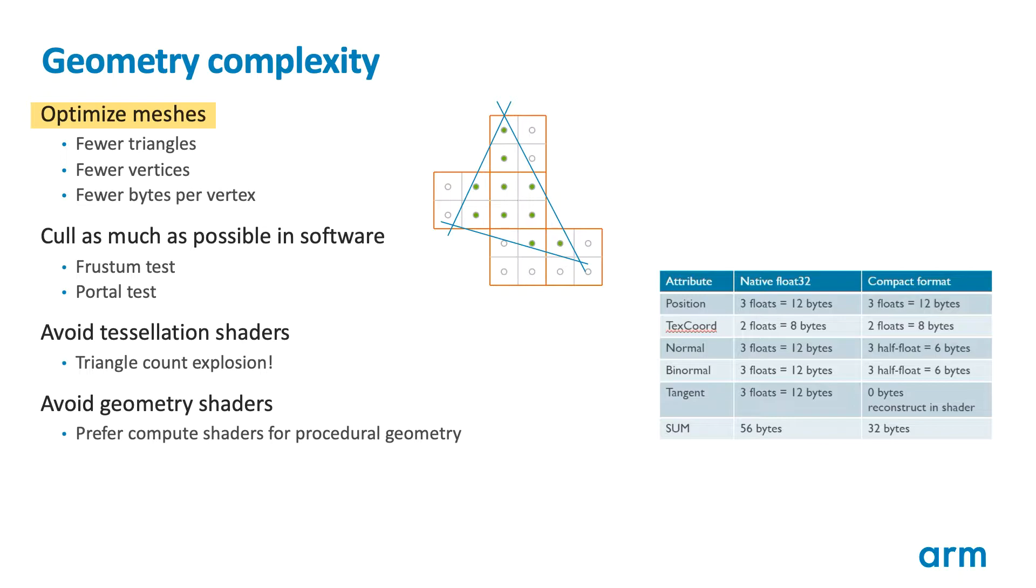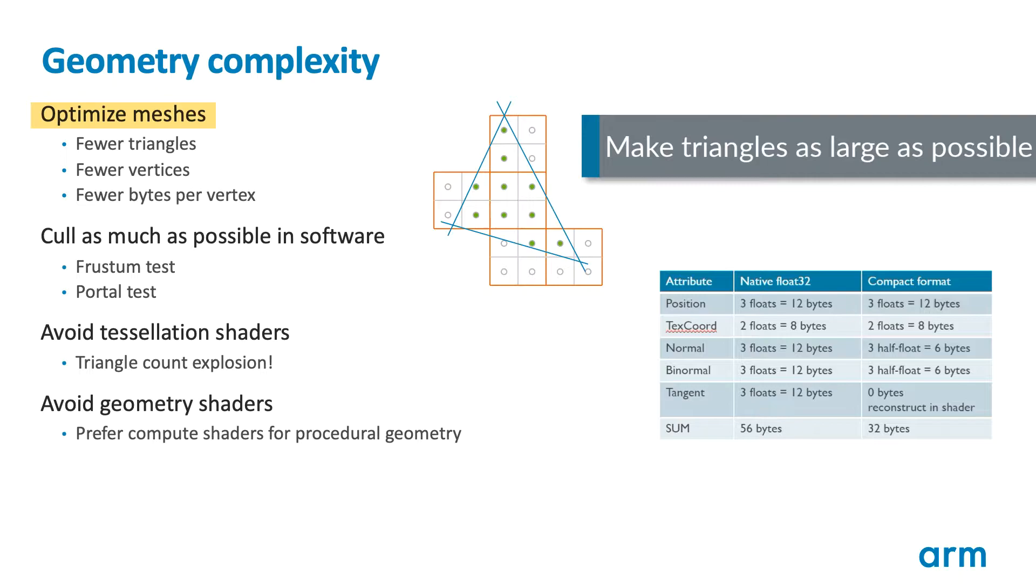This fragment efficiency comes from a reduction in the number of partial quads that are created. Fragment shading is processed by a stream of 2x2 fragment quads, and any fragments in a quad that are outside the edge of a triangle are wasted. This makes small triangles disproportionately expensive, so make your triangles and meshes as large as possible.